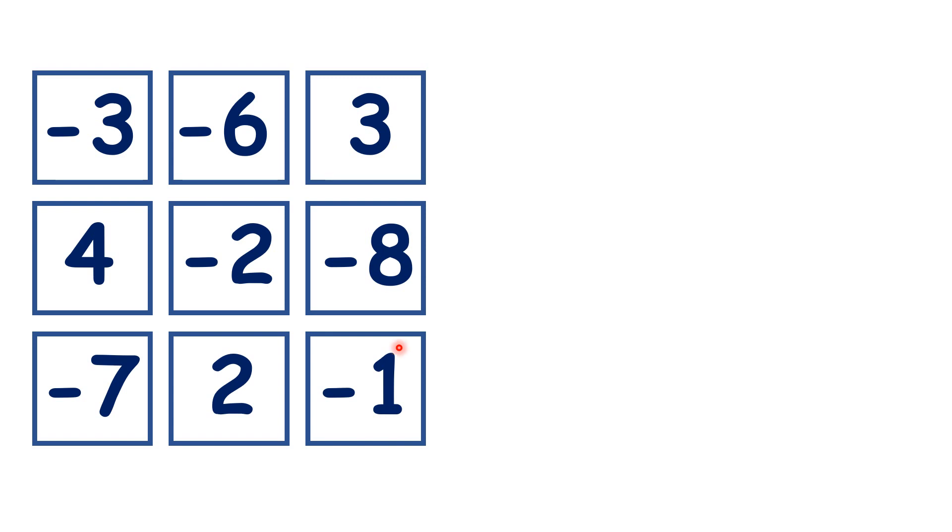Magic squares like this one, where we have negative numbers as well, work the same way as normal magic squares. All that you need to remember is that with negative numbers, you need to subtract rather than add to get your total.